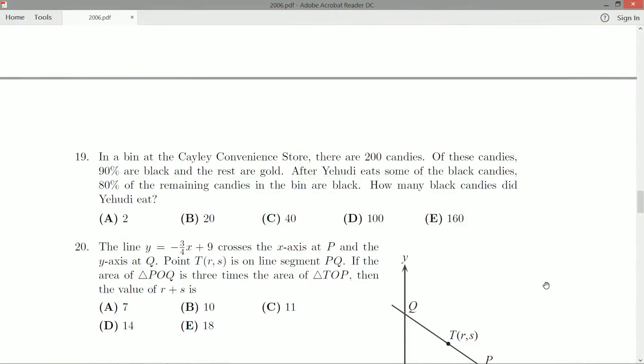In a bin at the Cayley convenience store, there are 200 candies. Of these candies, 90% are black and the rest are gold. So it shouldn't be that hard to figure out how many black candies and gold candies there are. 90% of 100 is 90, and so multiply that by 2, there should be 180 black and the remaining 20 gold.